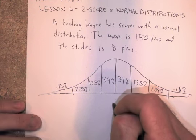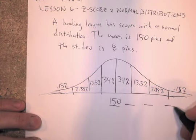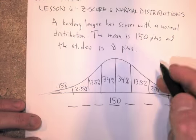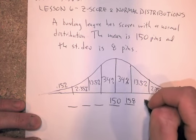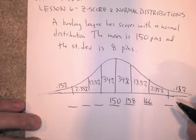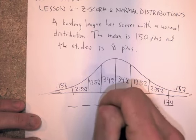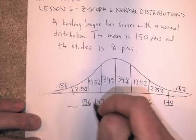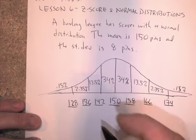So let's fill in the mean. Remember, that goes right in the middle. And then going up like this. We're talking eight pins is a standard deviation, so we're going up by eights, basically. 158, 166, 174, go down by eight here, minusing eight, I got 142,